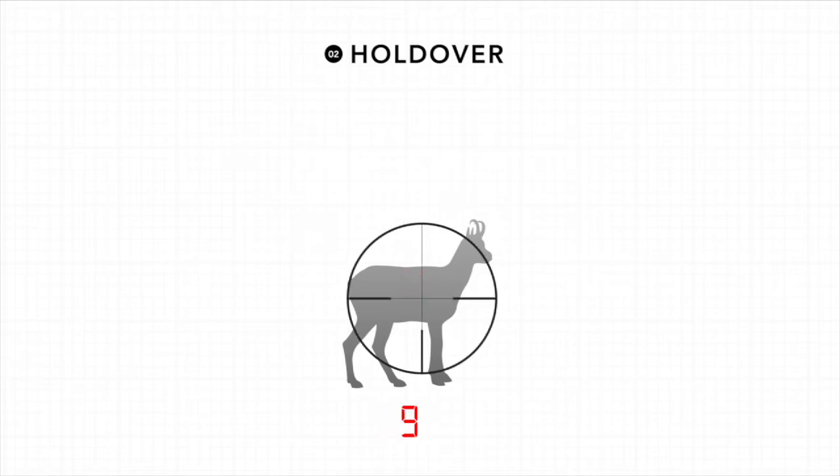The second output is holdover. This setting first displays the line of sight distance and then provides a measurement of how high you should hold over. Depending on whether you select EU or US in the menu, this will either be in centimeters or inches.